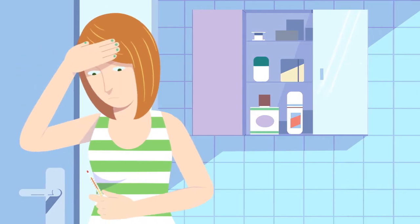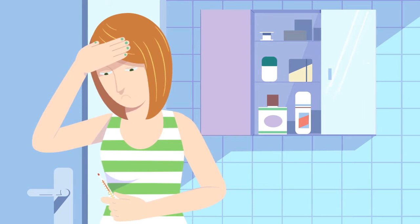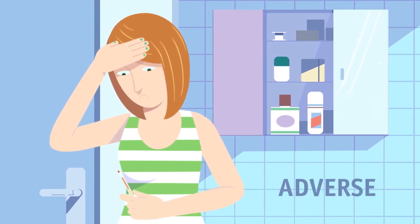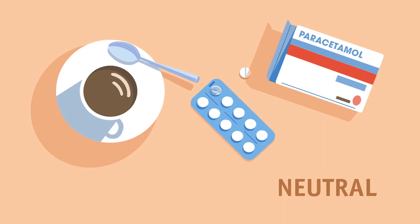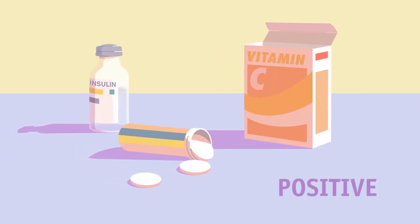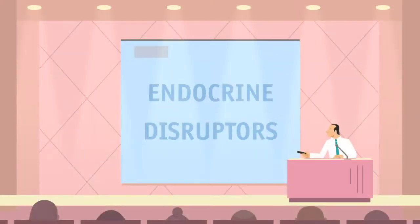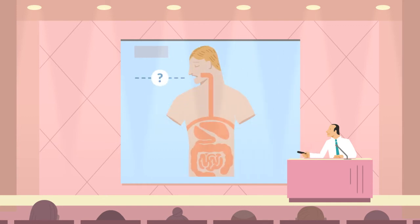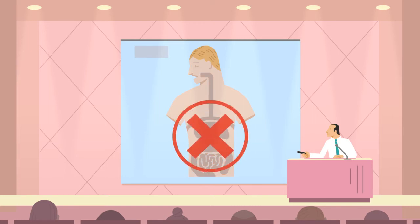There are three kinds of possible interaction with the endocrine system: interaction with an adverse, neutral, or positive effect. So when can interaction be considered as disruption? The World Health Organization defines an endocrine disruptor as a substance whose interaction with the hormone system causes adverse health effects in an intact organism.